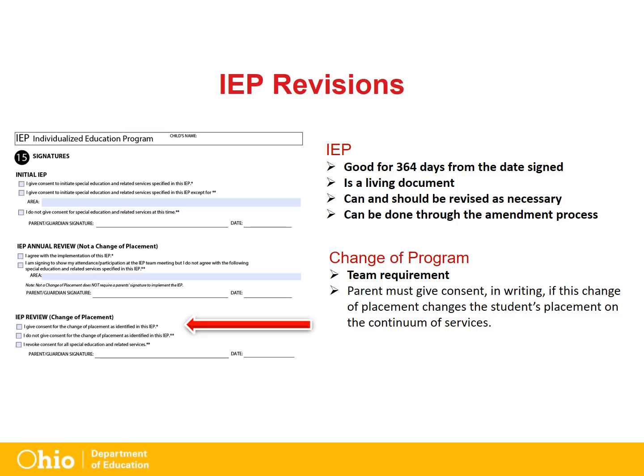A continuum of services ranges from instruction in general education, special education, special schools, home instruction, instruction in hospitals, and institutions. If the change in the student services proposed does in fact change the student's placement on the continuum of services, the parent must give consent in writing for that placement to happen.